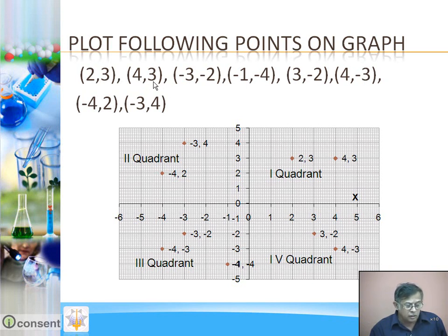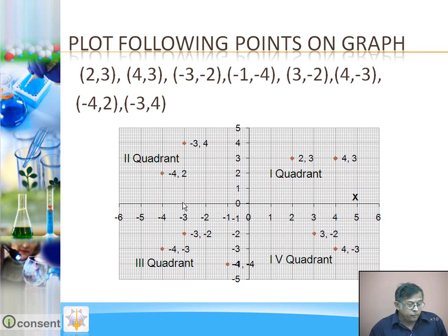For point (4, 3): the x-coordinate is 4, so consider 4 on the x-axis; the y-coordinate is 3, so consider 3 on the y-axis. Their point of intersection is (4, 3). Next, for point (-3, -2): the x-coordinate is minus 3 on the left side, and the y-coordinate is minus 2.